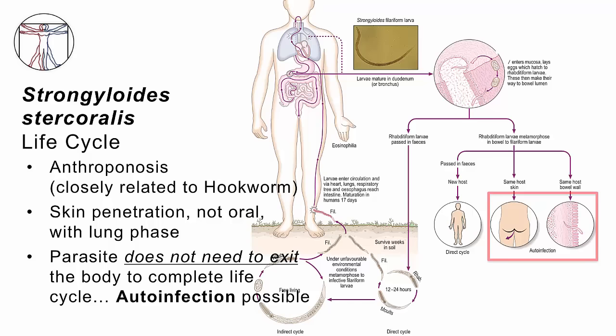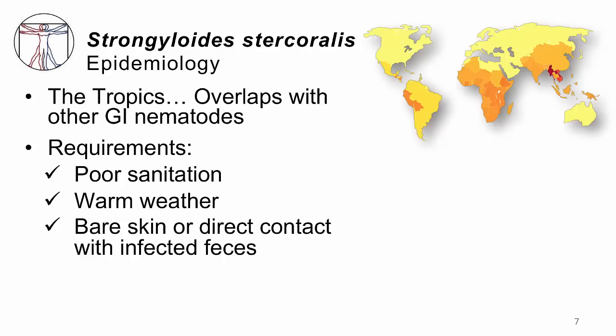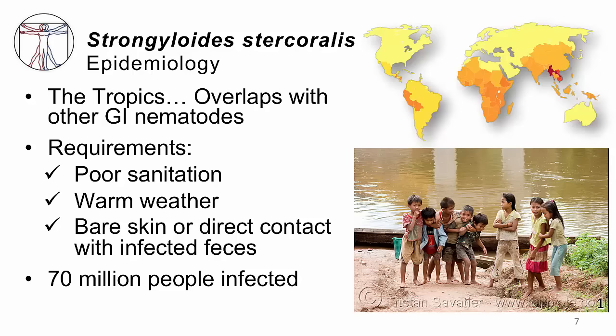So what's the epidemiology of Strongyloides? It happens throughout the tropics, just like all the other GI nematodes. All you need to become infected is poor sanitation, warm weather, and bare skin that comes into direct contact with soil that has been contaminated with human feces. Tens of millions of people are infected. There's a strong burden among those who walk around in the tropics without proper shoe gear.